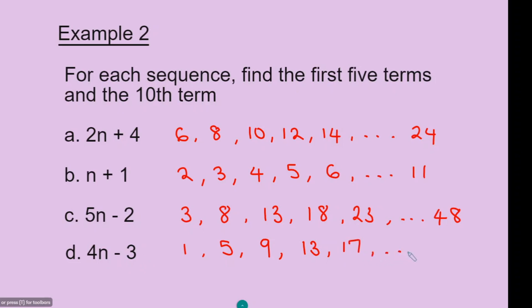And then to find the tenth term, n will be 10. So we go 4 times 10 is 40, minus 3 gives 37.